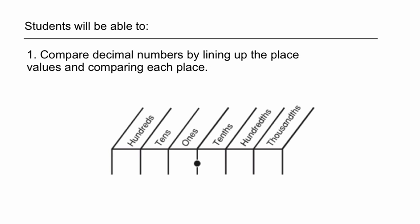At the end of this lesson, you, the student, should be able to compare decimals by lining up the place values and comparing each place. As we go through this lesson, we're going to be taking a look at where the place values are and lining up the ones. The ones are the key here — we're going to find the ones and then line them up.